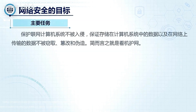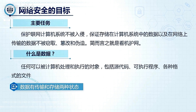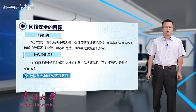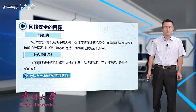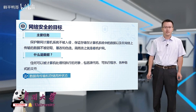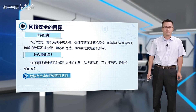Now let's discuss the goals of network security. The main tasks of cyber security aim to protect systems from intrusion and safeguard data from theft, tampering, or forgery. Simply put, it's about guarding the network.